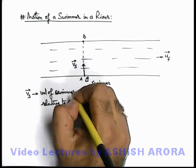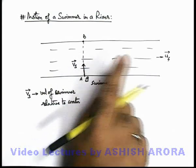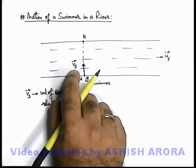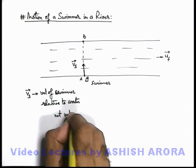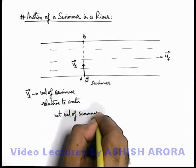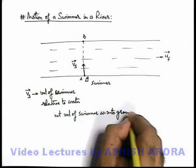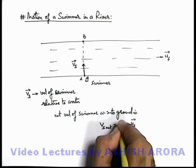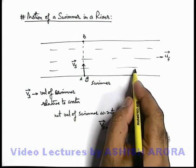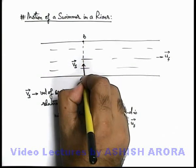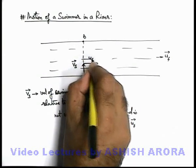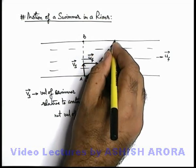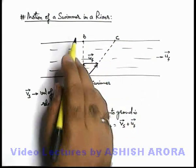As the swimmer swims in the water, the water velocity will certainly be added to it — water is the reference frame in which the swimmer is swimming at velocity v_s. So the net velocity of swimmer with respect to ground can be written as v_s plus u_f. Because u_f is the velocity of the river — the reference frame — we add it vectorially. The resultant vector gives the direction the swimmer is effectively moving, so the swimmer will reach position C on the other bank rather than reaching point B.